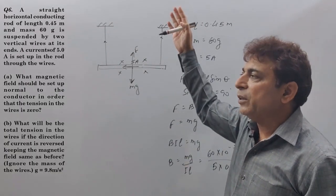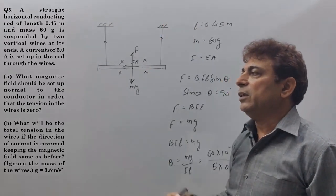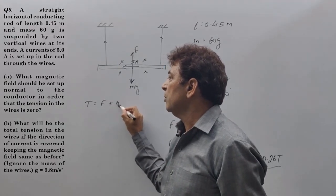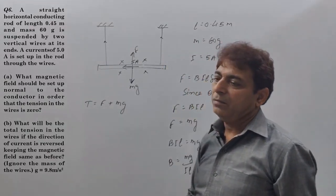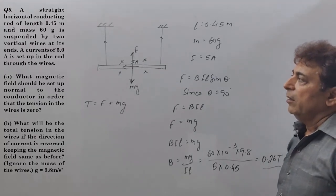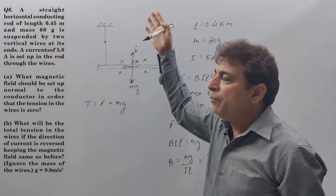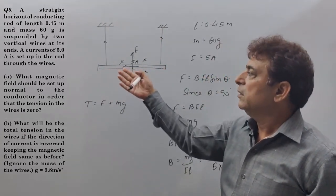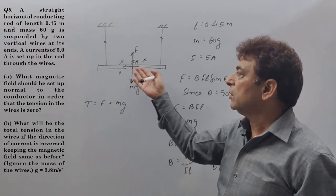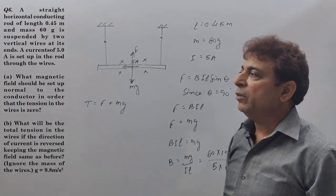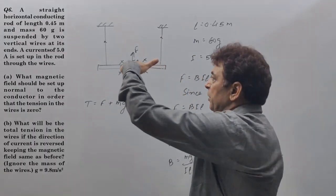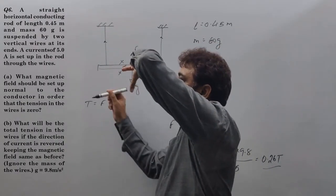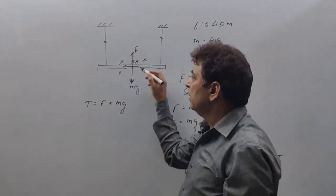The force which was acting upward will now act downward. The force was acting in the upward direction. If you change the direction of the current, that force which was acting upward will act downward. We can use Fleming's left-hand rule once again. Field is directed inward, current is in this direction. So force will act downward.